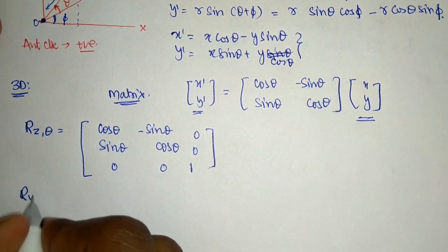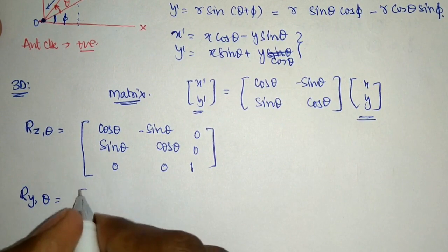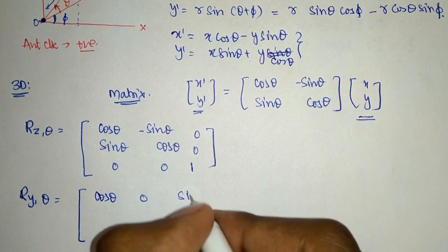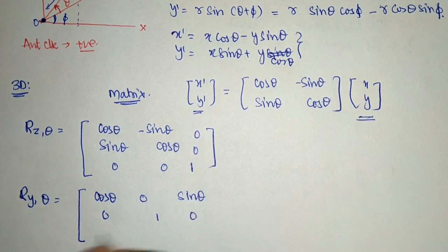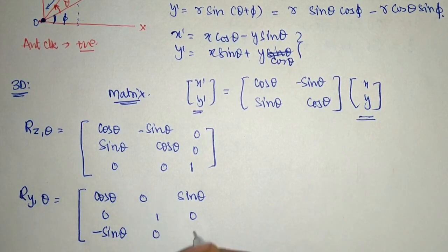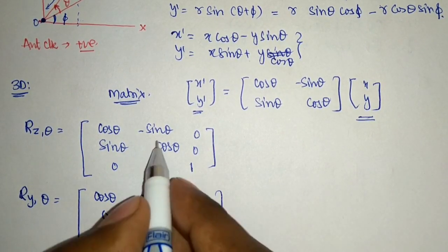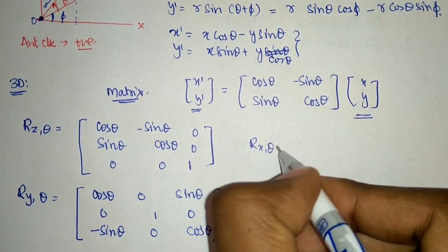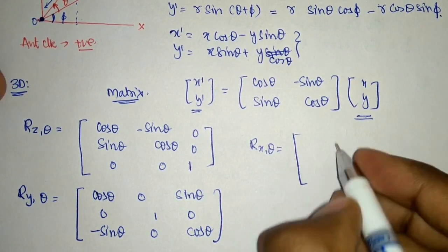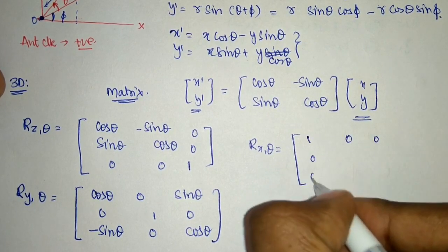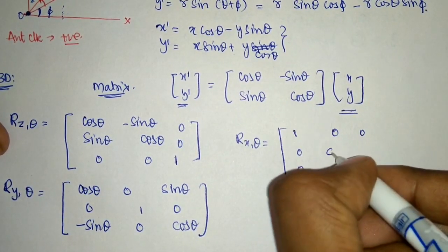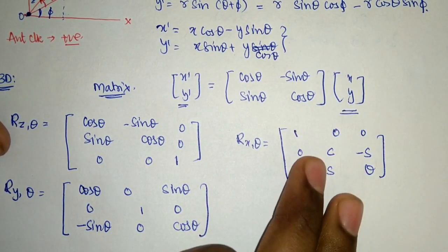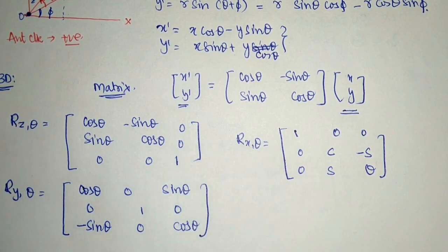For rotation about the y-axis, keeping theta angle, the matrix becomes: [[cos theta, 0, sin theta], [0, 1, 0], [minus sin theta, 0, cos theta]]. You can remember these directly because if a question comes you will need to apply these formulas. For rotation about the x-axis, the matrix is: [[1, 0, 0], [0, cos theta, minus sin theta], [0, sin theta, cos theta]]. These are the basic rotation matrices in three dimensions.